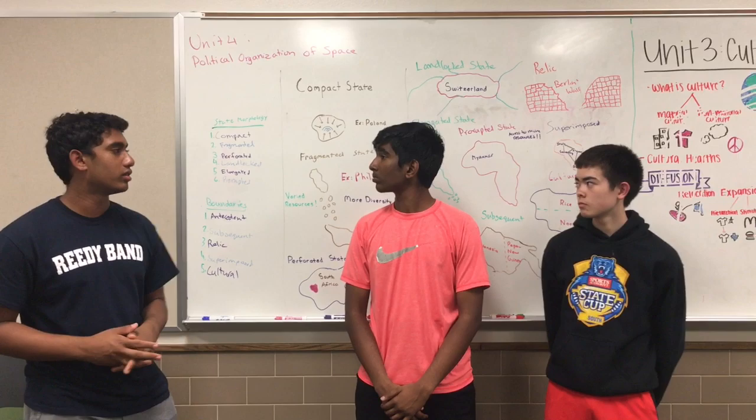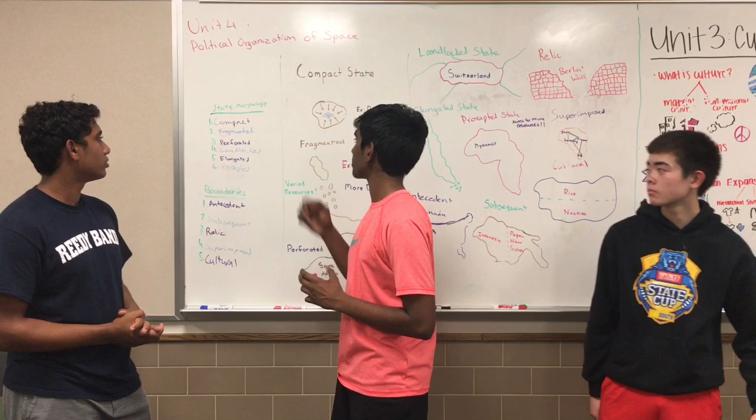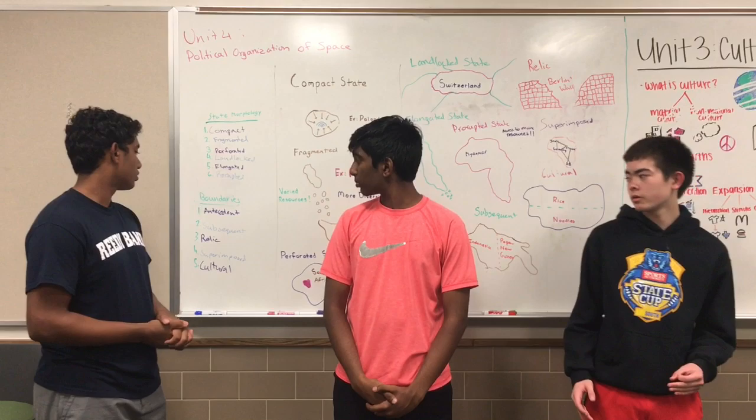Remember, in the different types of state morphology you have compact states, fragmented states, perforated, landlocked, elongated, and prorupted. And the different boundaries are antecedent, subsequent, relic, superimposed, and cultural. Thanks for watching, guys — this was a very brief review, but stay tuned for our next video.